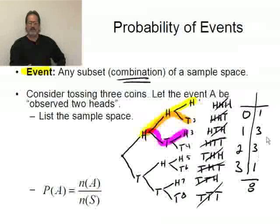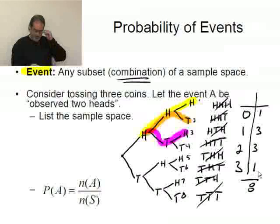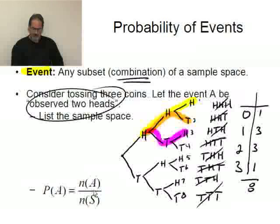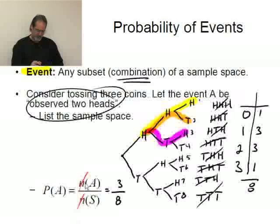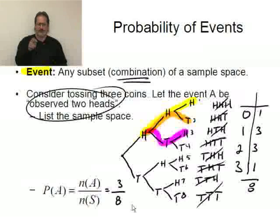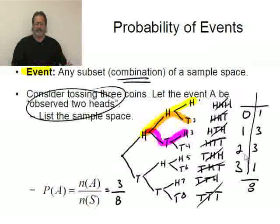This is the number of ways every possible event could happen. If I take each of these and divide, that gives me the probability. So the probability of A, where A is observing two heads, is the number of ways A can happen divided by N of S. Two heads can happen three ways, so this is three divided by N of S. N of S is eight — there are eight elements in my sample space. The probability of getting exactly two heads when tossing three coins is three-eighths. Now notice this was theoretical — I derived it mathematically, not by simulation.